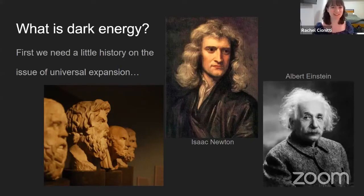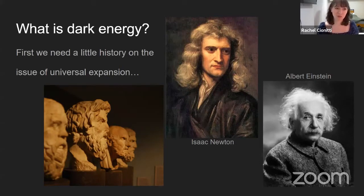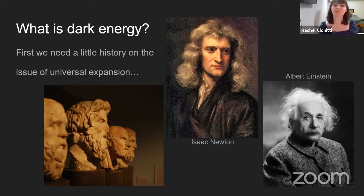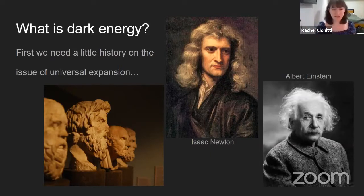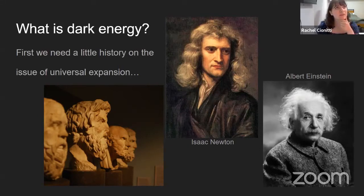Let's go over some history. What is dark energy? To understand it and the role it plays, we need a little history on universal expansion — whether the universe is infinite or finite, growing, shrinking, or staying the same. Long ago, the Greeks thought the universe must be finite, reasoning that if it were infinite there would be infinite stars and the sky should be completely lit up. But they looked up and saw empty spots, so the universe can't go on forever. Isaac Newton came along with his idea of mass creating an inward pull and reasoned that if the universe were finite, all the mass would inwardly pull in on itself and the universe would collapse. So he thought the universe was probably infinite.